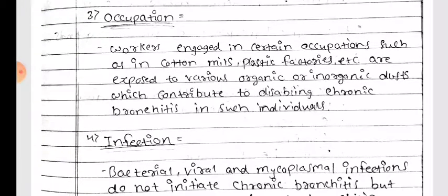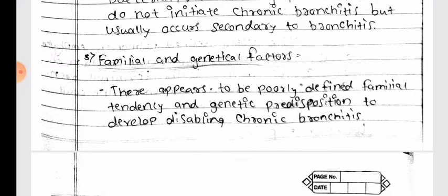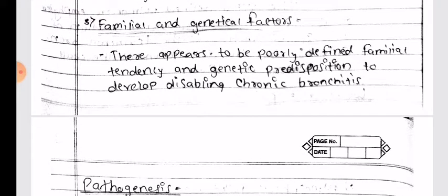Occupation: Workers engaged in certain occupations such as in cotton mills, plastic factories, etc. are exposed to various organic or inorganic dust which contribute to disabling chronic bronchitis. Infection: Bacterial, viral, and mycoplasmal infections do not initiate chronic bronchitis but usually occur secondary to bronchitis. Familial and genetic factors: There appears to be a poorly defined familial tendency and genetic predisposition to develop disabling chronic bronchitis.